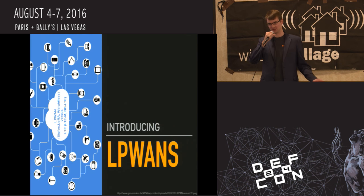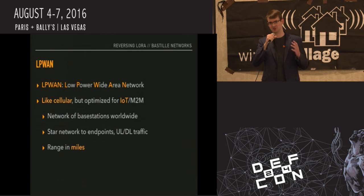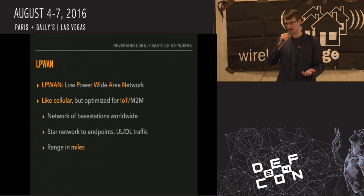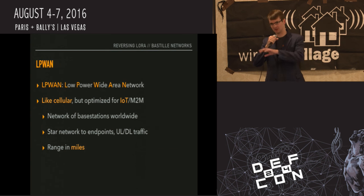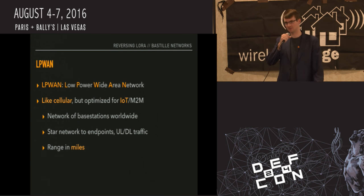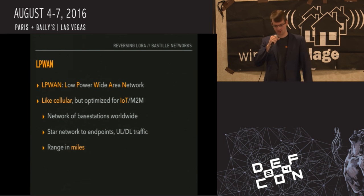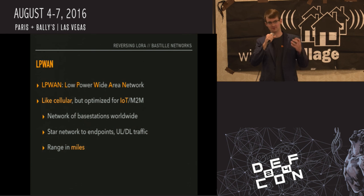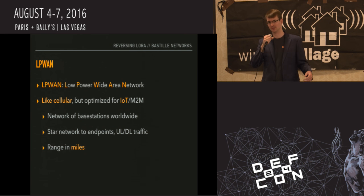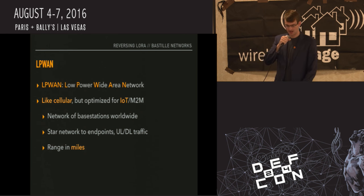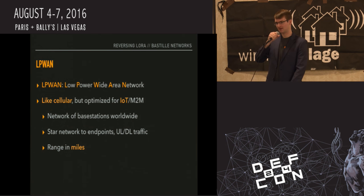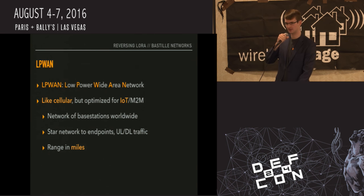That brings us to our topic today: low-power wide area networks, LPWANs. Think of these as just like cellular, but optimized for IoT and M2M applications. You have a network of base stations deployed over some area of coverage — local, a city, or the entire world — and devices connect up to them in a star network. There's no meshing, no routing, just a device wireless link to the base station. They can uplink and downlink traffic and have a typical range of miles.